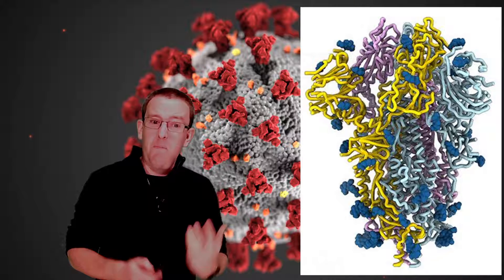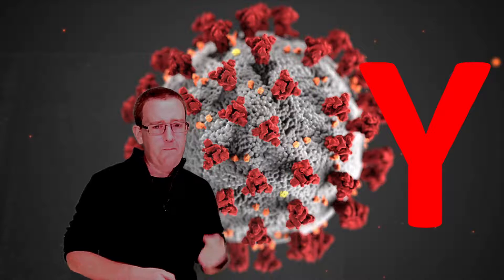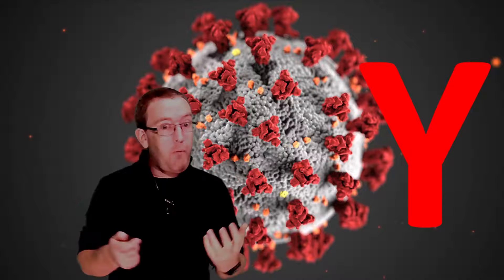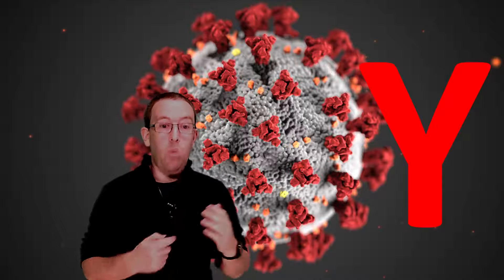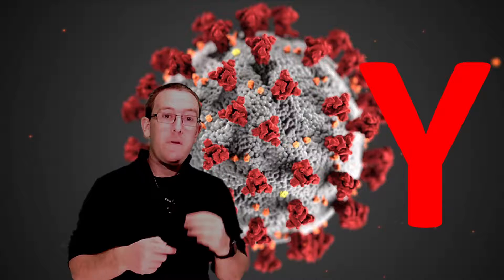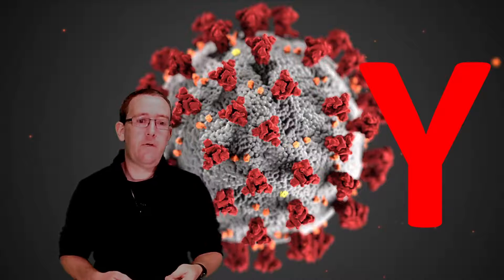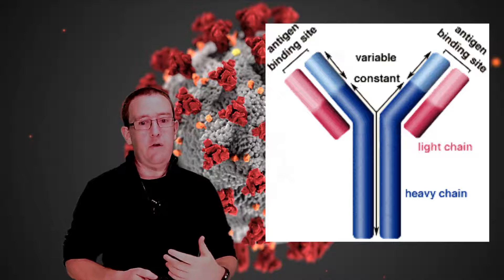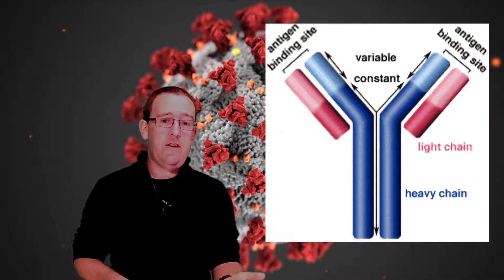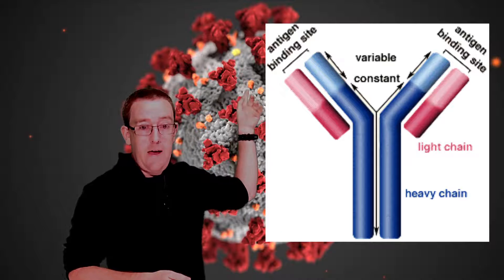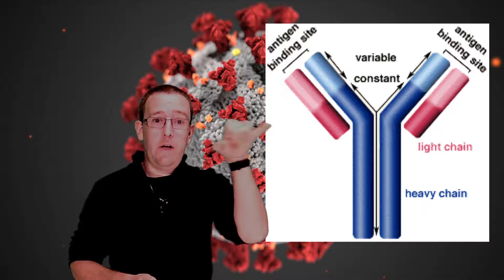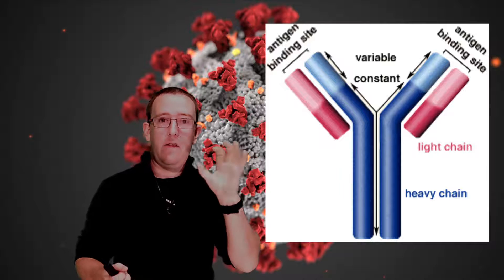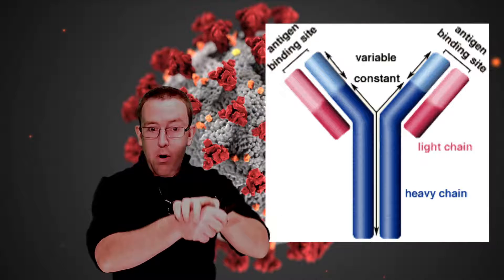If we look at antibodies themselves, in media reports we simplify them to Y-shaped chemicals, which they are, but that's early learning center stuff. Even at A-level we simplify. We show four protein chains attached together, and at the top, at the points of the Y, that's where they bind with a specific complementary shape like a lock and key.